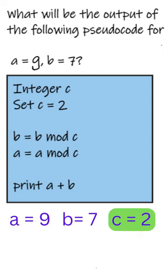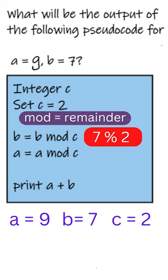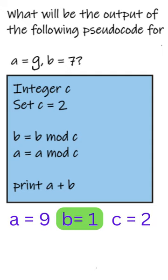In the third line we have to perform b equals to b mod c. b mod c gives us the remainder after performing b divided by c. So b contains 7 and c contains 2. What's the remainder after dividing 7 by 2? It's 1. So now b contains 1.